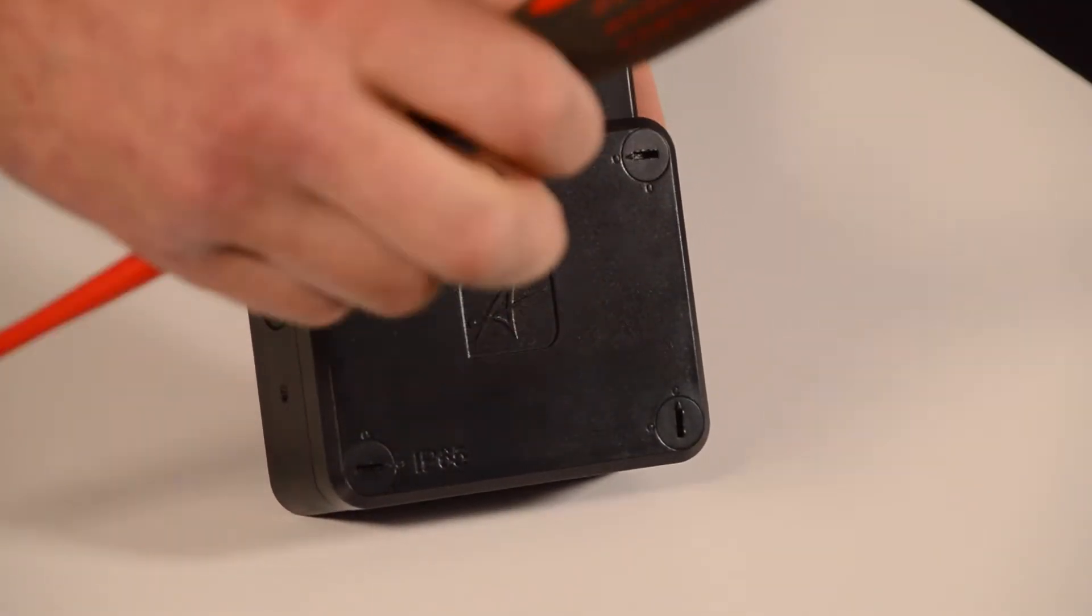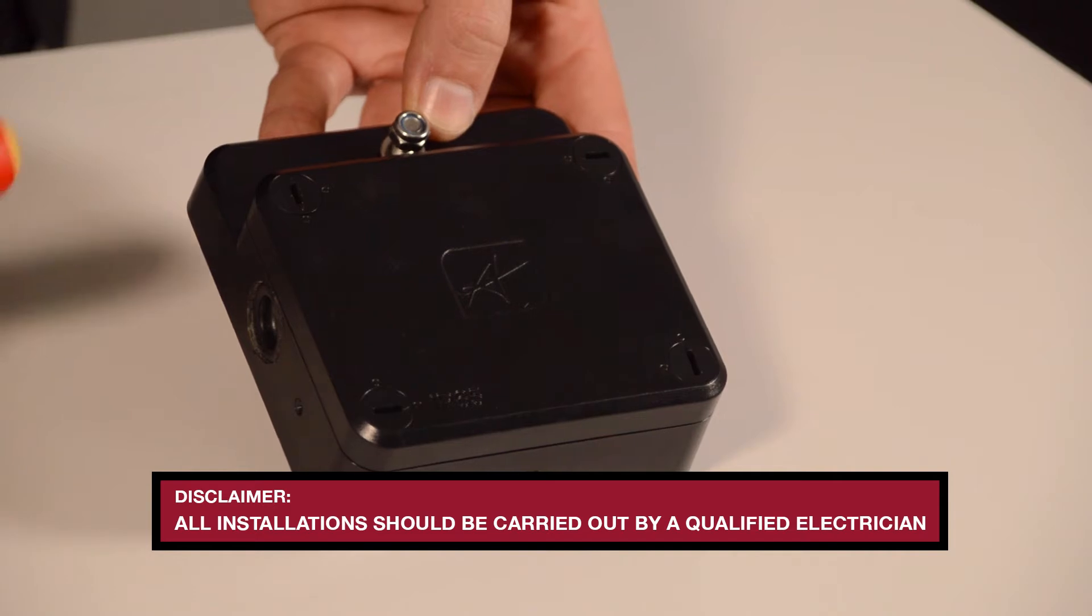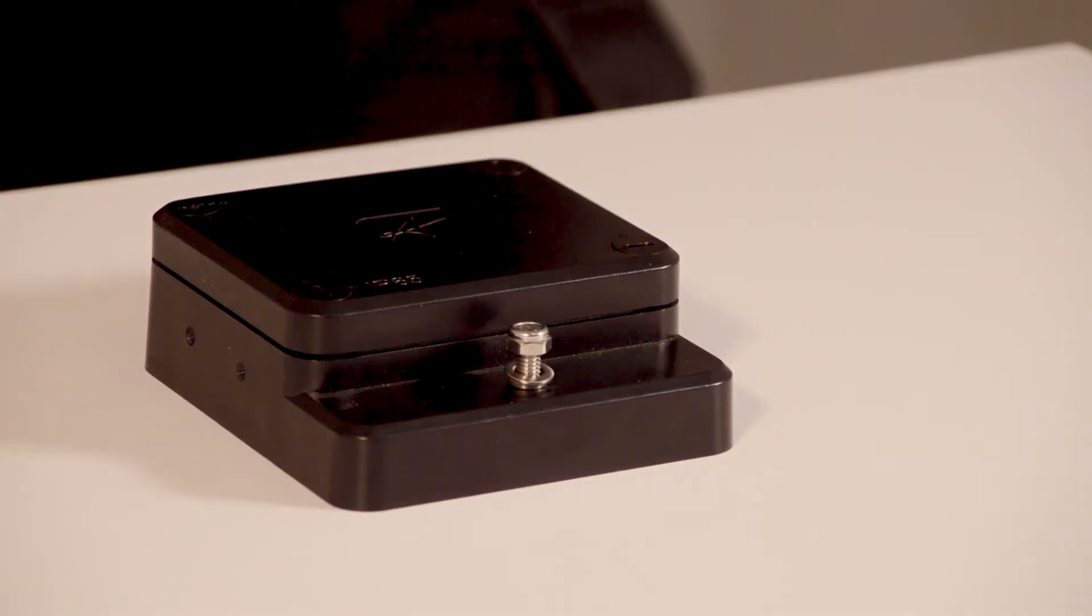This is the IP65 Mini Flood Box, Ansell Lighting's own adaptable box for wall mounting mini floodlights, suitable for installation of floodlights up to 5kg.